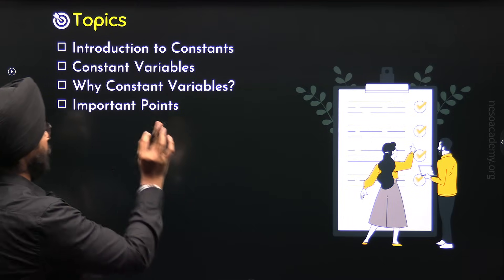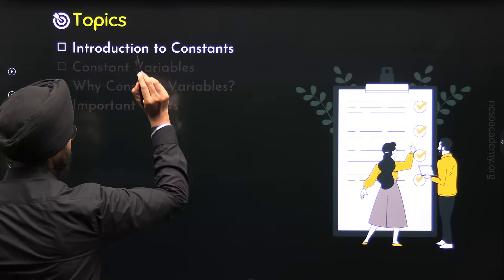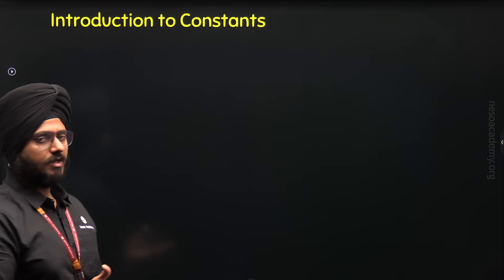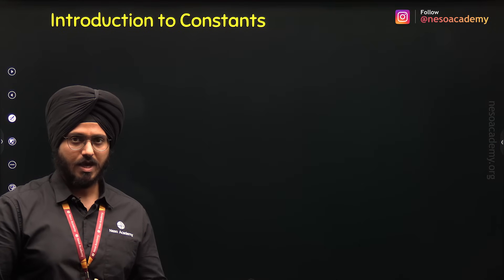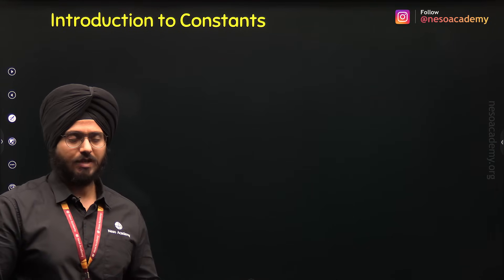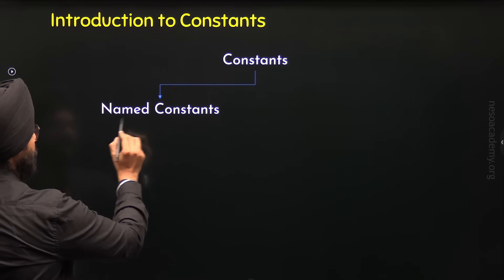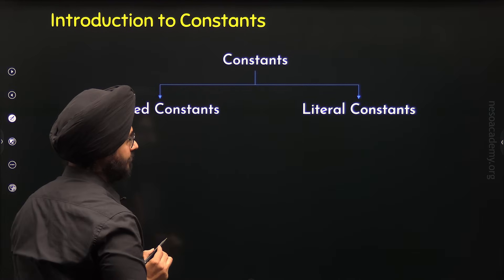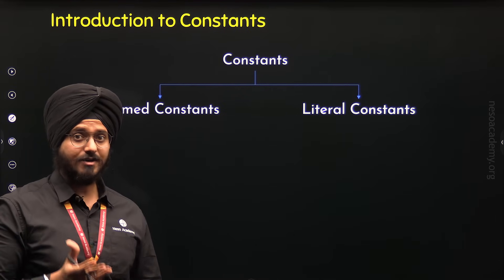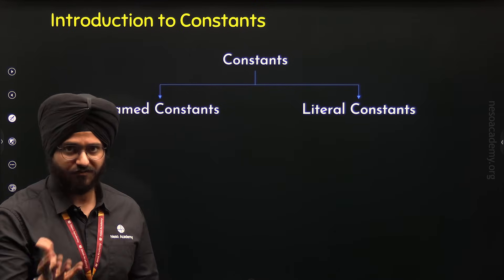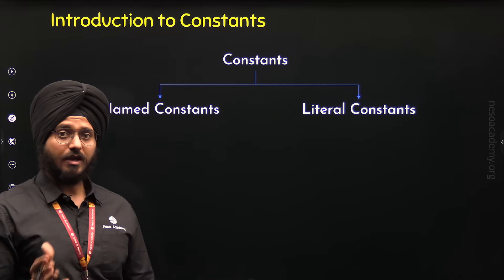There are a total of four topics in this lecture. Let's get started with the first topic, Introduction to Constants. A constant in C++ is a fixed value which cannot be changed. There are two different types of constants in C++: named constants and literal constants. A named constant is a constant which receives a value and a name — it has a name and a fixed value. A literal constant is just a fixed value which we can directly use in the code.